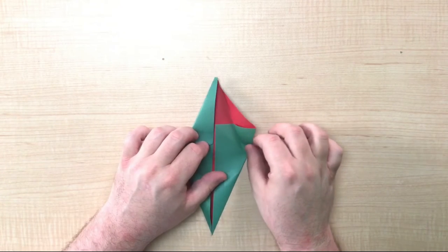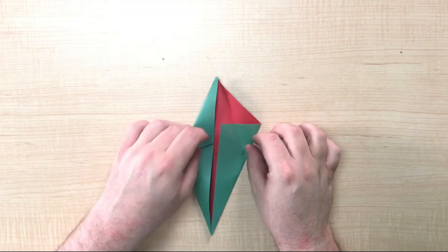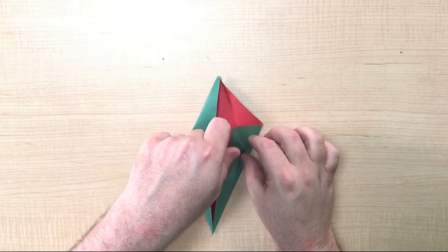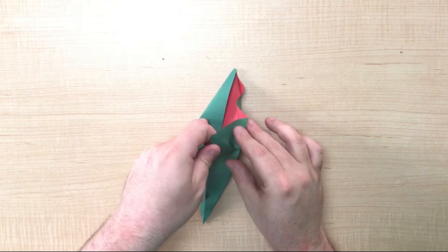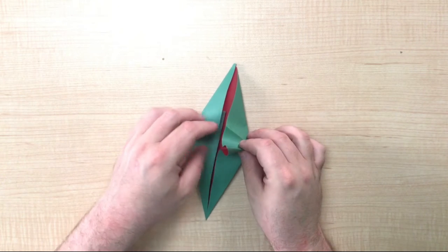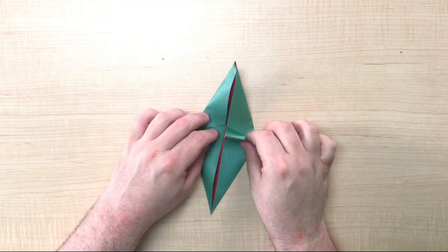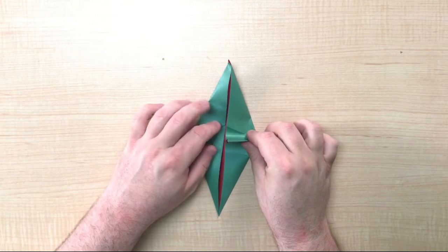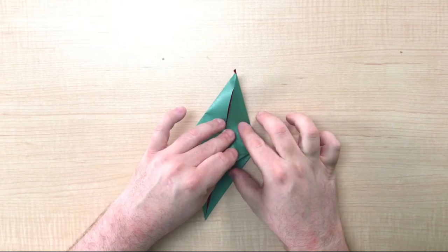Open up the fold that you just made and take the point, and with a pinching motion with your right hand, create a flap in the middle of the paper and fold it down.